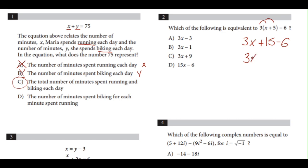Here we'll have 3x. 15 minus 6 is going to be plus 9. And as you can see, this will be answer choice C.